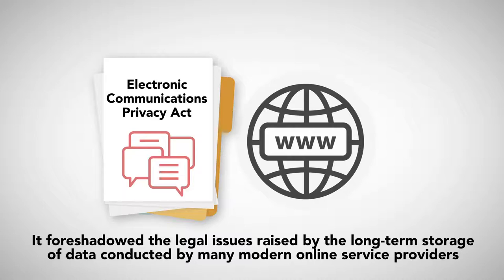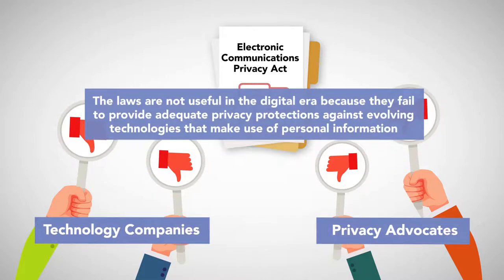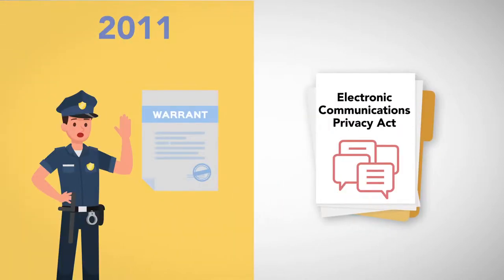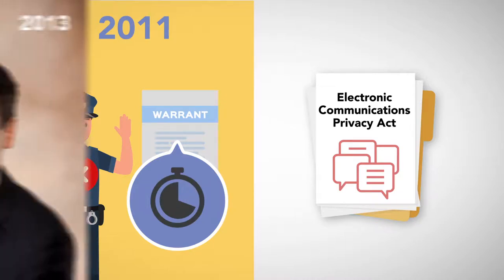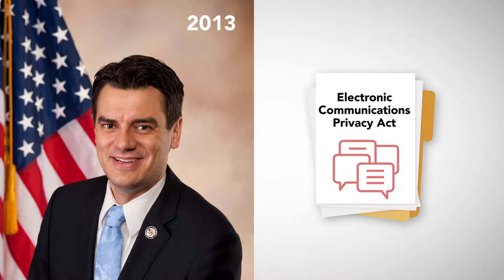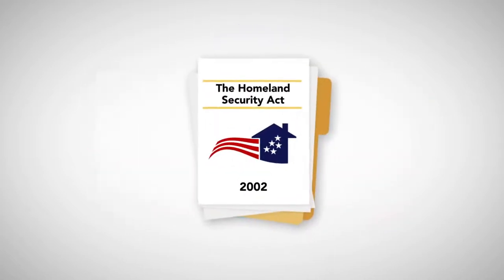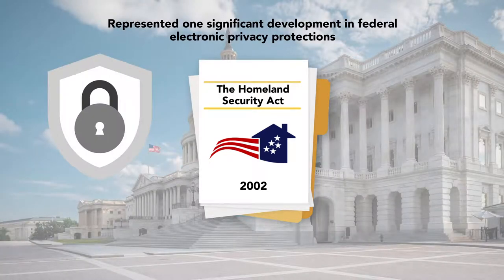The Electronic Communications Privacy Act preceded the World Wide Web but foreshadowed the legal issues raised by the long-term storage of data conducted by many modern online service providers. However, it has recently attracted substantial criticism from technology companies and privacy advocates, who claim the laws fail to provide adequate privacy protections against evolving technologies. In 2011, the Senate introduced amendments that would have required law enforcement to obtain a search warrant before accessing any electronic communication regardless of how long it had been stored. Representative Kevin Yoder introduced a similar bill in the House in 2013, but these amendments never passed. Proposed amendments, including the Email Privacy Act, were reintroduced in 2015 and remained pending.